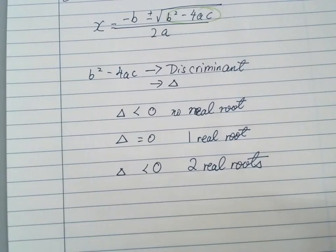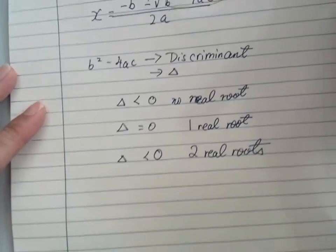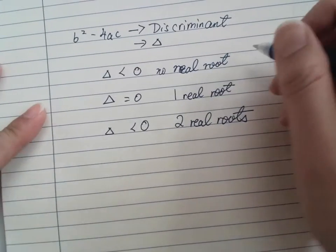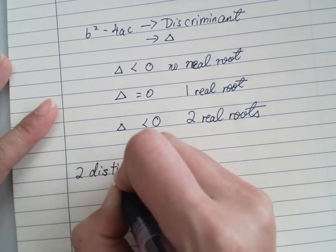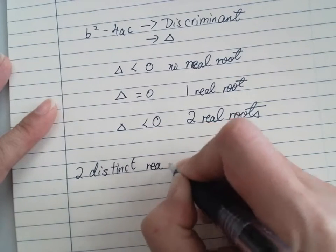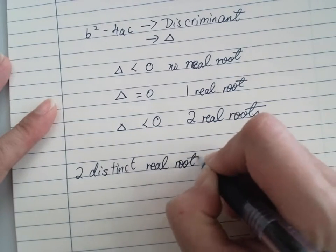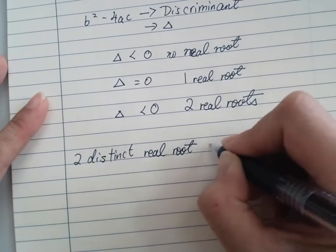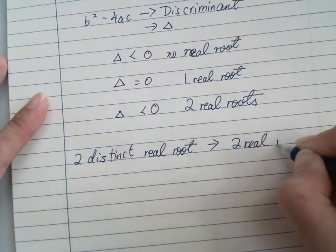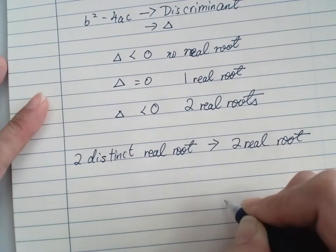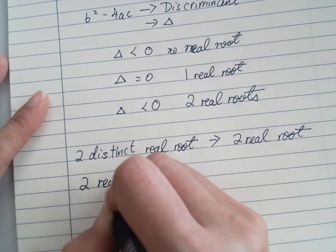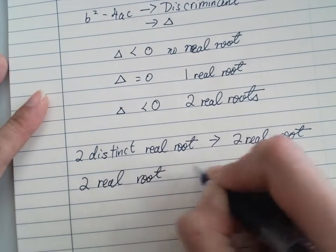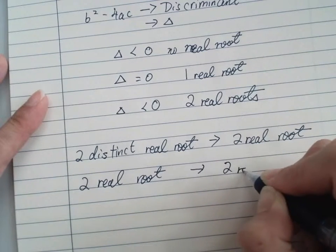Before we get to the example, I would like to stress some wording as well. Two distinct root means that it have to be two real roots. Just two real roots means that it could be one, it could be two real roots.